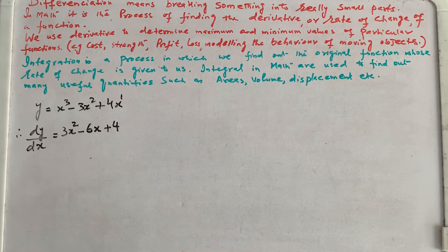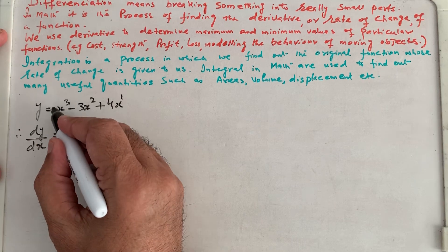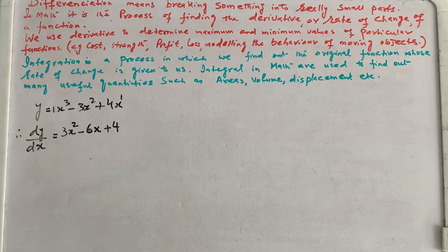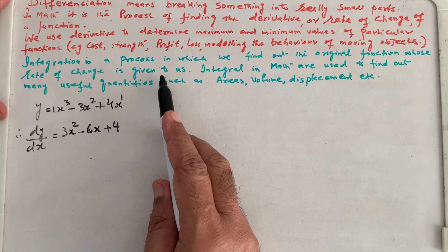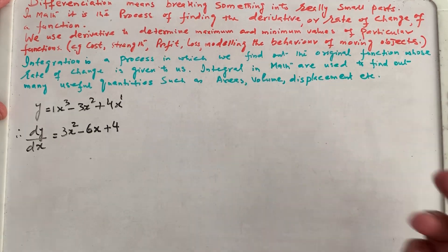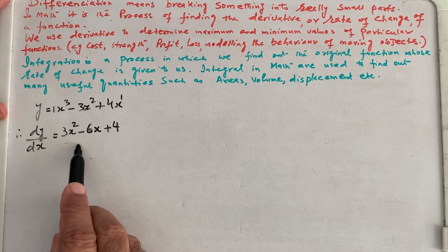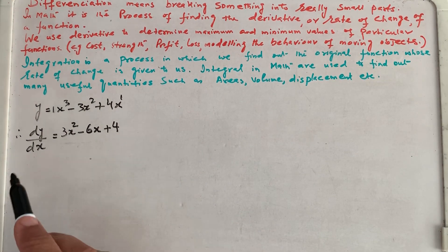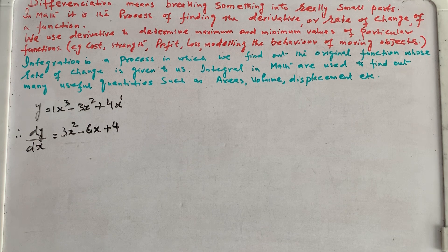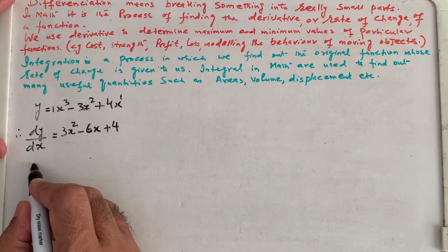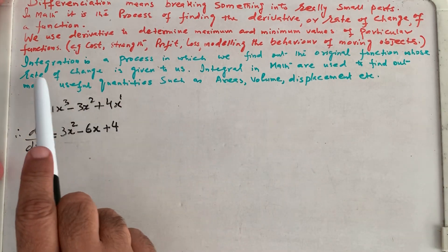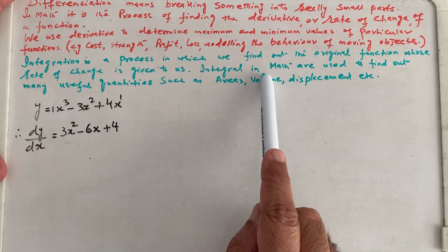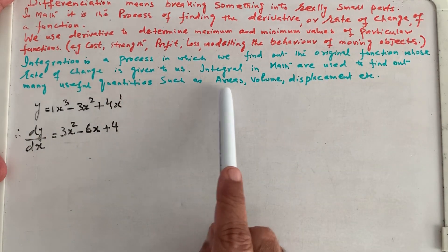We have seen how differentiation works — there are fixed rules. We multiply the coefficient by the power and reduce one power of the variable. The inverse of differentiation is integration. Integration is a process in which we find out the original function whose rate of change is given to us. So if the derivative is given, we find the original function — that process is called integration. Integrals in math are used to find useful quantities such as area, volume, displacement, etc.